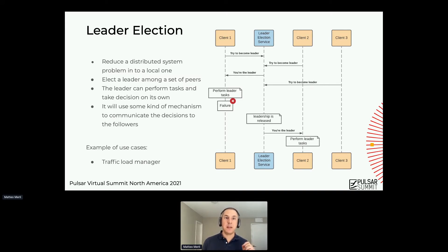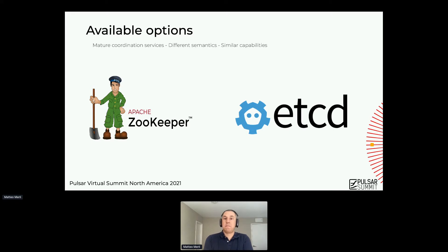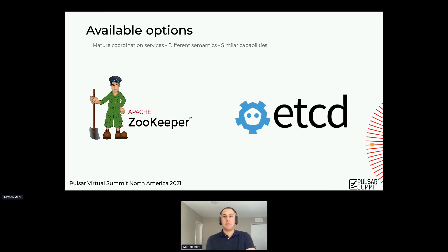The theory of both distributed locks and leader election is easy and very compelling — it really simplifies how you have to reason about these components. There are several options for this kind of coordination. There are different semantics, but very similar capabilities. The most known and used ones are ZooKeeper and etcd. The APIs are different, they have different mechanisms, but you can do the same things on both systems. There are performance differences and different design choices, but at the end of the day, you can do the same stuff.